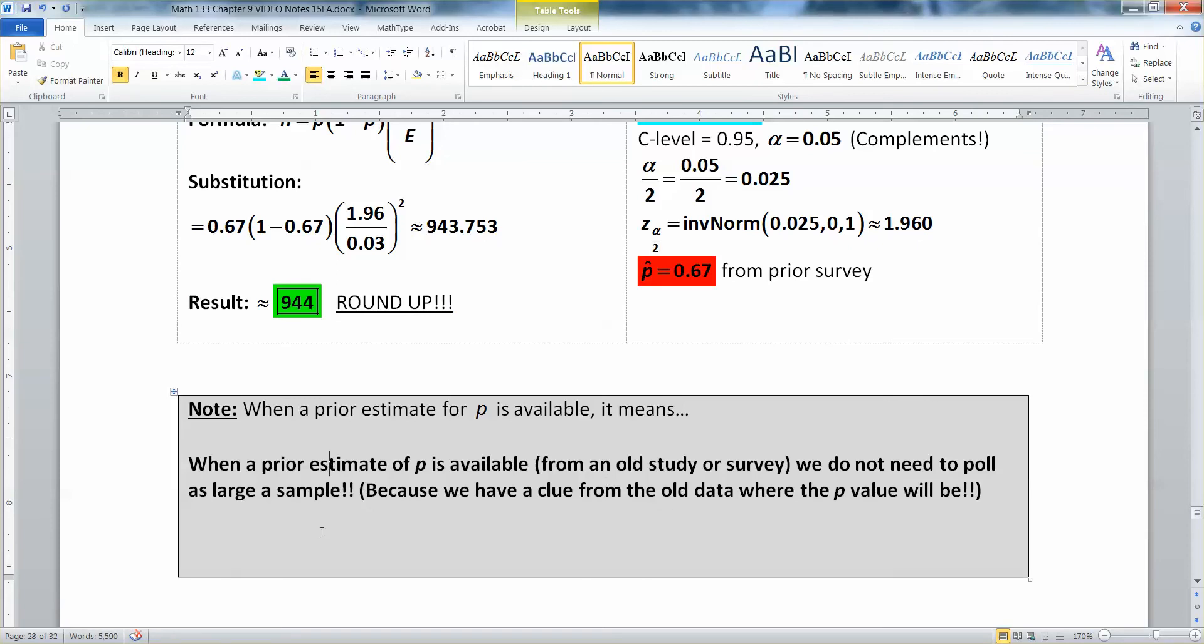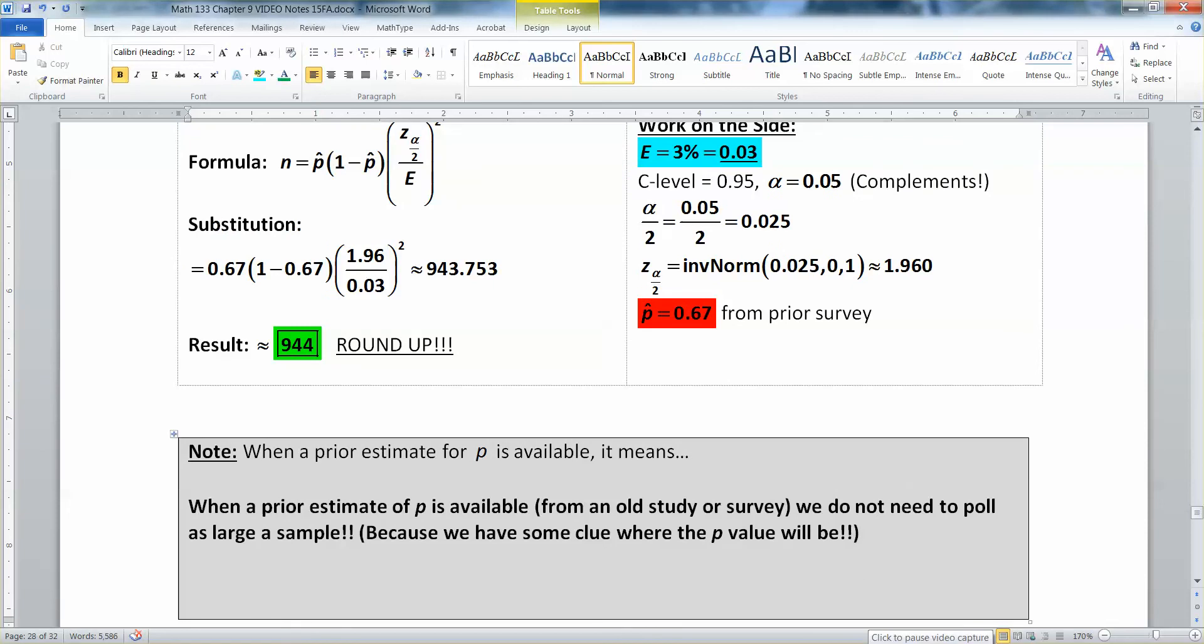And that's what I just typed up here. So when you have a prior estimate of P available from an old study or survey, that means you don't need to poll as large a sample. And that's because you have some clue. You have some clue from the old data where the P value will be. It's nice to have a clue every once in a while.